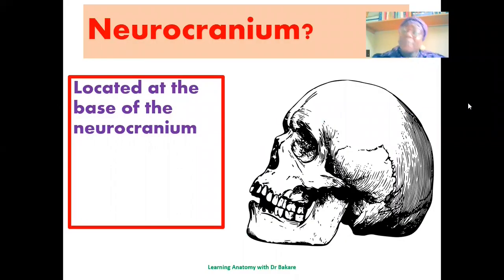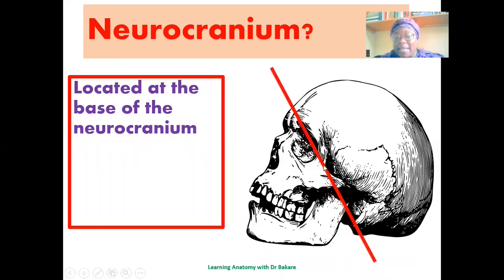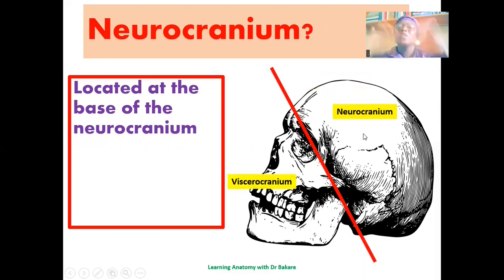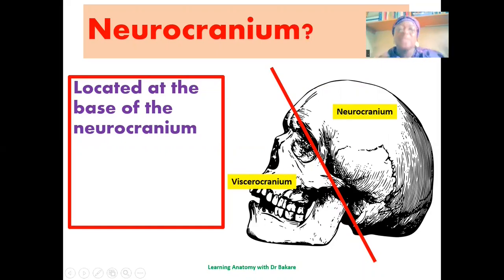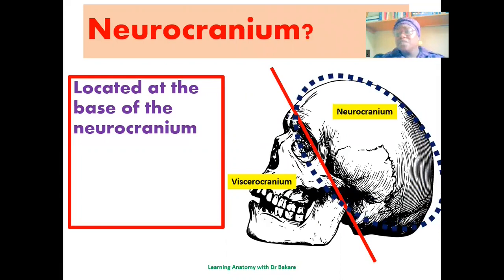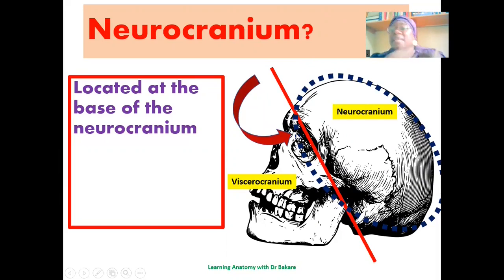The ethmoid bone is located at the base of the neurocranium, and that is why it is taken as part of the structural component of the neurocranial bones. If you divide the entire skull or cranium into its two subdivisions, the upper part is the neurocranium, while the lower part is the viscerocranium. The upper part encloses the brain — that is where the name neurocranium comes from. The ethmoid bone is located at the inferior part of the neurocranium, seen at the base of the neurocranium.